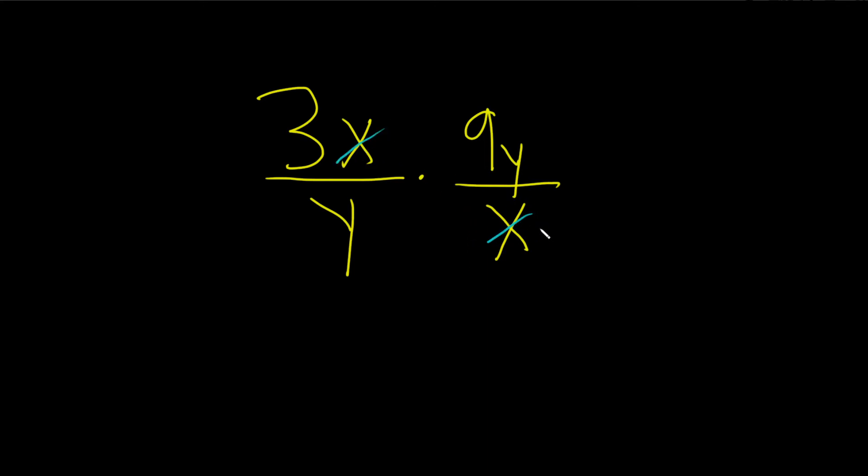If you're wondering what's left here, you're just left with the number 1. Likewise here, we have a y, and we have a y here. Just cross it out. And if you're wondering what's left here, you just have a 1.